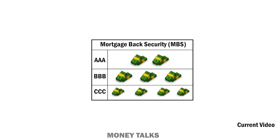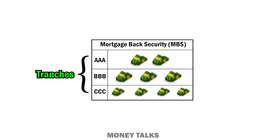In the mortgage-backed security, the loans are arranged in layers, also known as tranches, and each layer is given ratings such as AAA, BBB, and CCC. If the MBS has more AAA-type loans, it is considered a safe bond. Investors could bet money on each tranche separately. Investors who wanted less risk would choose the AAA tranche with minimal returns, while those choosing the BBB or CCC tranches took on more risk in exchange for much higher returns.